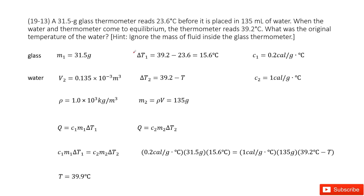How can we do that? We check the quantities given. First, we look at the glass. The mass is given as M1. We can also get the temperature change as T1 — final temperature minus initial temperature. From the textbook, the specific heat for glass is C1, which is 0.2.